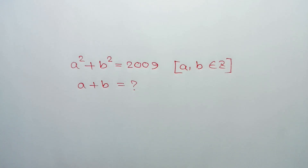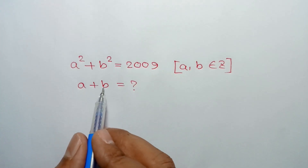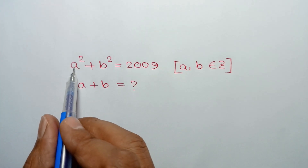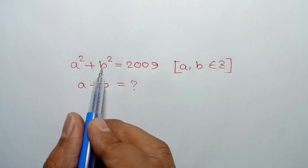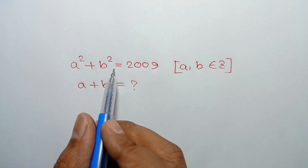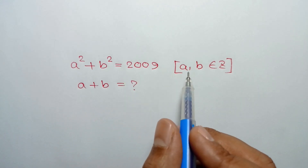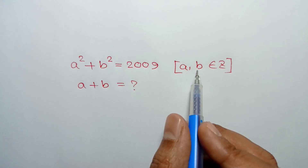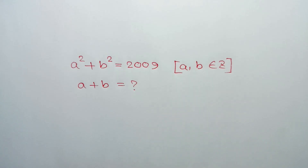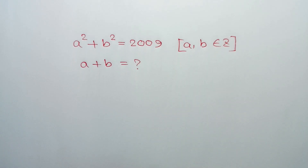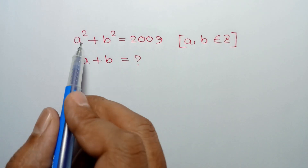Hi everyone. In this video I am going to show how to find the value of a plus b, where a squared plus b squared is equal to 2009 and a and b are integers.